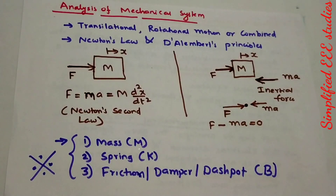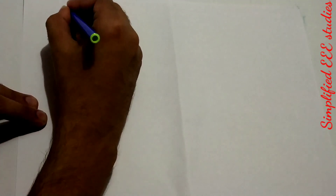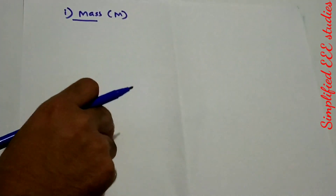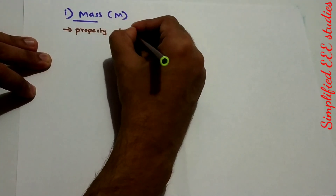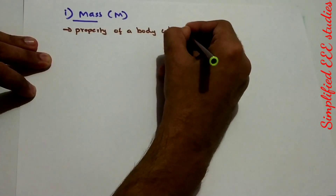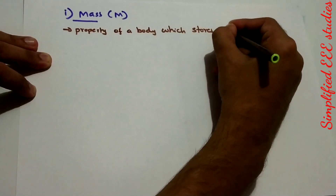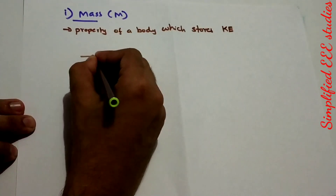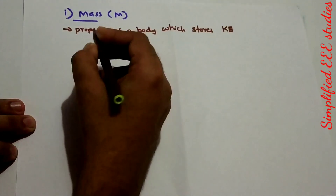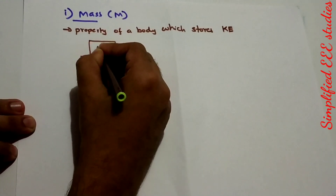Now let us discuss: what is mass, what is spring, and what is the importance of damper or friction or dashpot. First, let us see the importance of Mass, denoted by the letter M. Mass is the property of a body which stores kinetic energy. Now consider one diagram: there will be one body having mass M trying to move at a displacement of X.